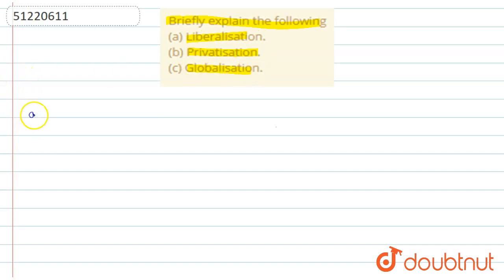So the first one is liberalization. Liberalization - what happened basically? The government had many rules and regulations which they had reduced.